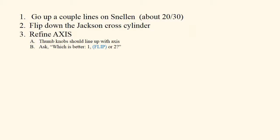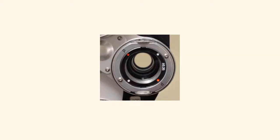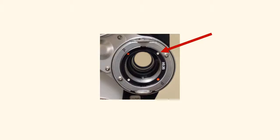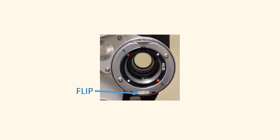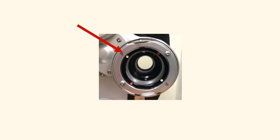Then we ask, which is better, one, then we flip it using the thumb knob, or two. So you say to the patient, which is better, one, and the white dot is on this side, then you use the thumb knob to flip it, and the white dot will be on this side, and you finish your sentence, or two.